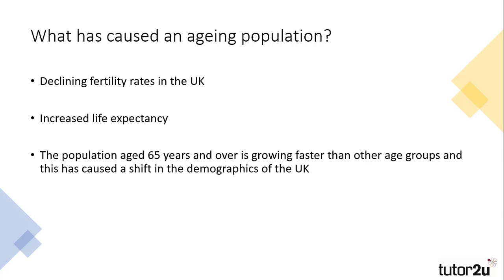So, why does the UK have an ageing population? Well, there are a number of reasons for this, but quite simply, people are living longer and less people are being born. The decreased fertility rate in the UK, coupled with increased life expectancy, has shifted the average age of the UK citizen, and this has led to the Office for National Statistics declaring that over 65s is the fastest growing age group in the UK, which is leading to a shift in the demographics of the UK.